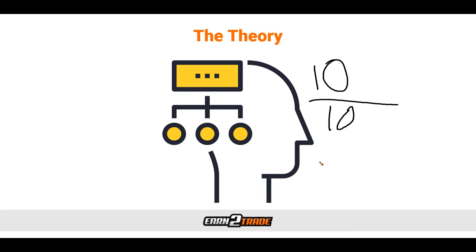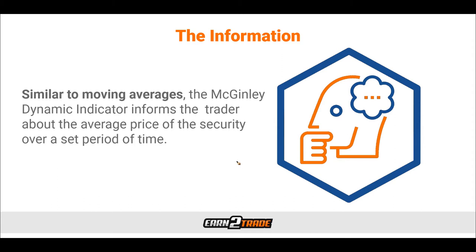The McGinley Dynamic Indicator also overcomes the lag coming from the fixed time-length model that standard moving averages employ. In today's markets, when price reacts extremely quickly to events, the Dynamic Indicator is becoming more and more popular as it manages to reflect and respond to them better. Similar to moving averages, the McGinley Dynamic Indicator informs the trader about the average price of the security over the set period of time, helping smooth out the noise and providing a better representation of market dynamics and speed changes. The result is a smoother and more responsive line on the chart, with lag reduced as much as possible.